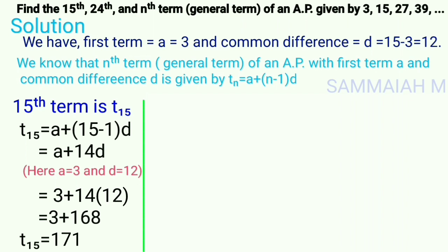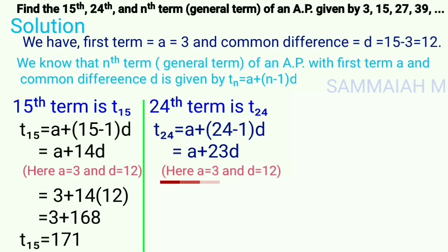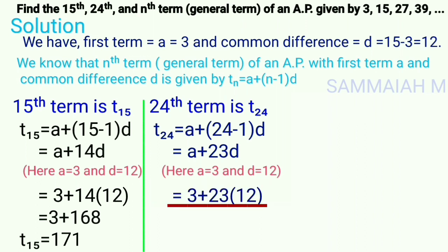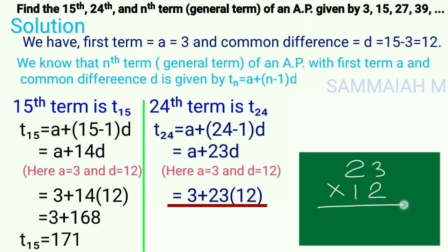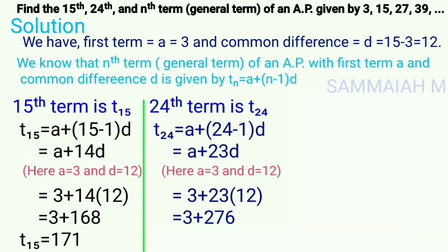Next, we find the 24th term. t24 = a + (24 − 1) × d = a + 23d. Here a = 3 and d = 12, so substituting: 3 + 23 × 12 = 3 + 276 = 279. So the 24th term is 279.